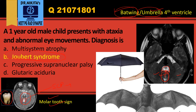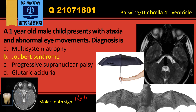In glutaric aciduria, there is a batwing appearance of the sylvian fissures. So to remember the distinction: glutaric aciduria shows a batwing sylvian fissure, while Joubert syndrome shows a batwing fourth ventricle.